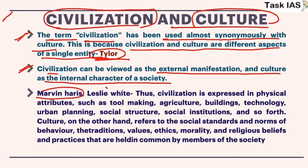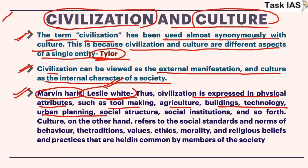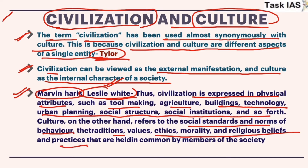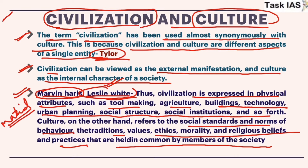Leslie White is a neo-evolutionist and Marvin Harris belongs to the cultural materialist school. According to them, civilization is expressed in physical attributes like tool making, agriculture, building, technology, urban planning, and social institutions, whereas culture refers to social standards, norms of behavior, traditions, values, ethics, morality, and religious beliefs. These anthropologists tried to differentiate material from non-material objects, focusing more on material objects of culture.